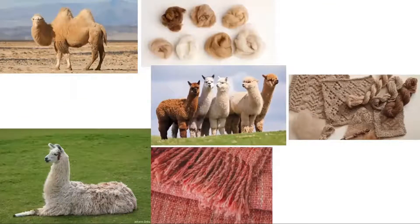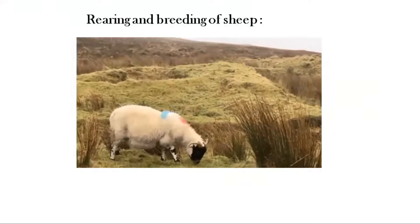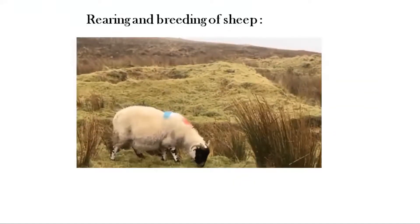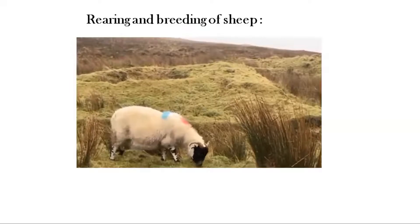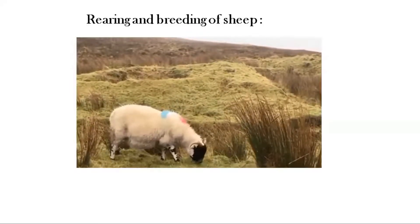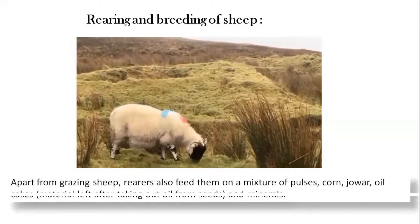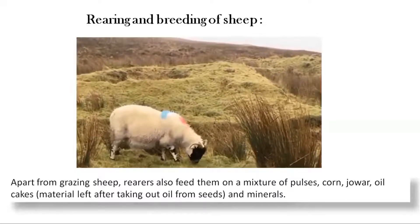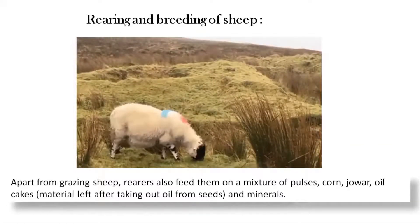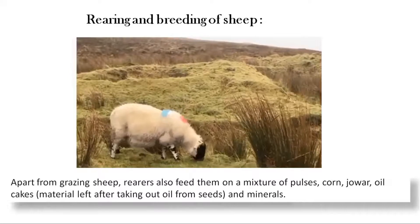Now let us learn about the process of obtaining wool, starting with the rearing and breeding of sheep. Sheep are herbivores and mostly feed on grasses and leaves, but just feeding on grasses and leaves is not enough. The rearers also provide plant products — a mixture of pulses, corn, jowar, oil cakes, and minerals — to obtain good quality and texture of wool fibers. In winter, sheep are kept indoors and fed on leaves, grain, and dry fodder.